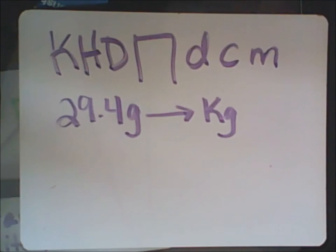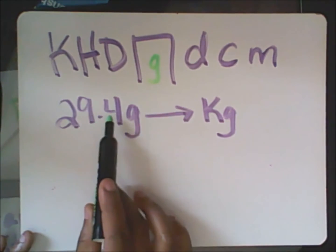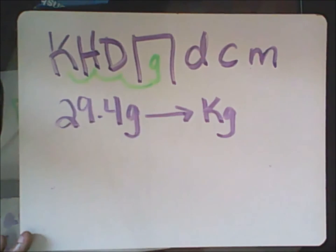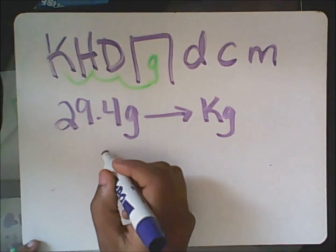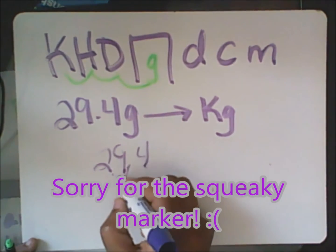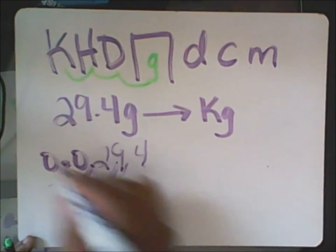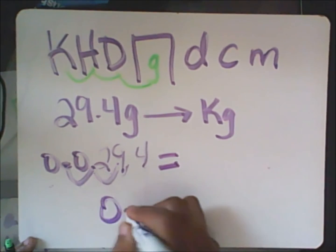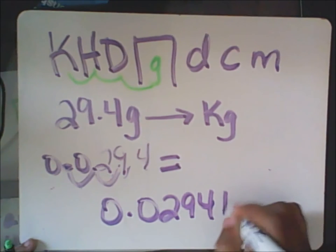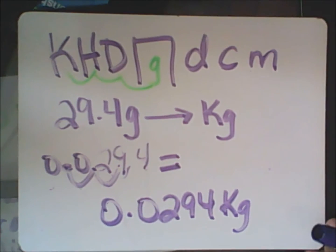Let's try another one. You're going to start where the grams are, which is right here in the middle. You're going to move your decimal back one, two, and three places to the left because that's the direction you're going. Put your decimal there, go back one, two, and three, filling those little gaps with zeros. Your final answer becomes 0.0294 kilograms.